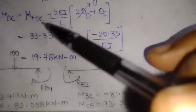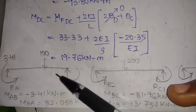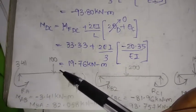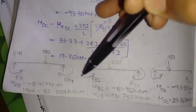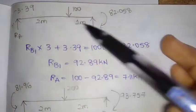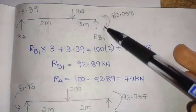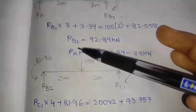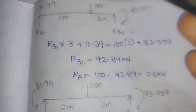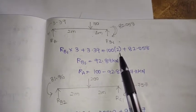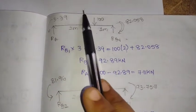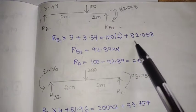With the final end moments obtained, we apply them diagrammatically to each span. Taking span AB with the given loading and applying the calculated moments, we take moment equilibrium to find RB1 and RA. For example, RB1 × 3 plus the anti-clockwise moment equals the clockwise terms: 100 × 2 plus the end moment of 82.058 kNm (already a moment, so no distance multiplication needed).